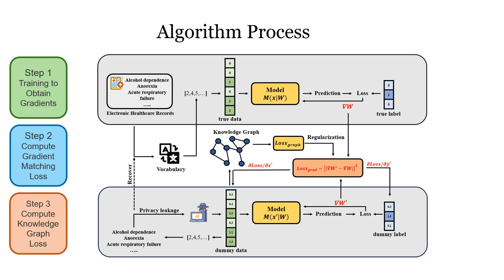Finally, in the third step, regularization loss is calculated using a knowledge graph constructed from the co-occurrence relationships in the EHR data obtained in advance. The error loss from the second step and the regularization loss from the third step together form the final loss function, which is then used for gradient optimization of the dummy data and dummy labels.